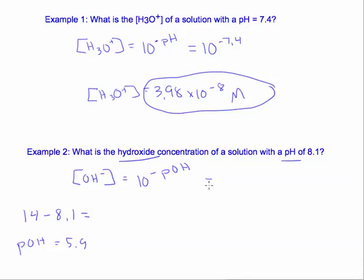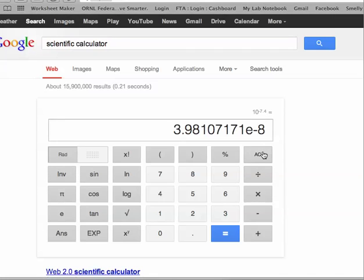So this is equal to 10 to the negative 5.9. And let's go back to our calculator and see what that is. We have to hit inverse again. Negative 5.9.